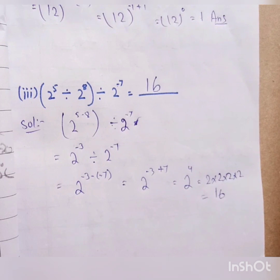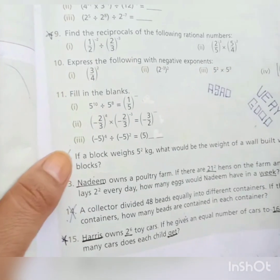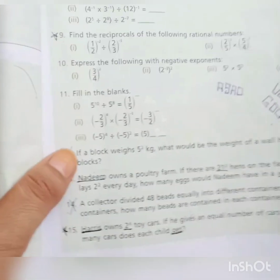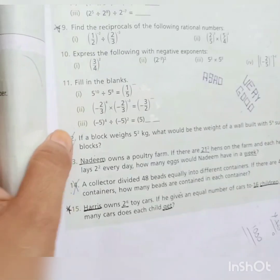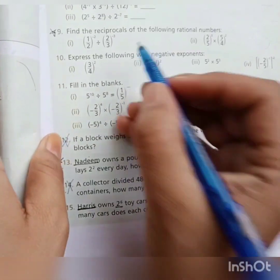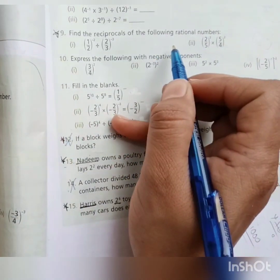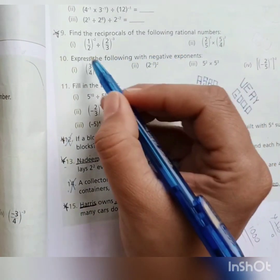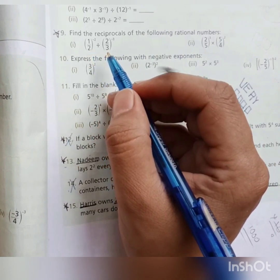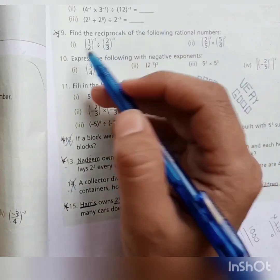With this, our question number 8 is solved. Question number 9 starts. We have: find the reciprocal of the following rational numbers. We have rational numbers given and we have to find their reciprocals.